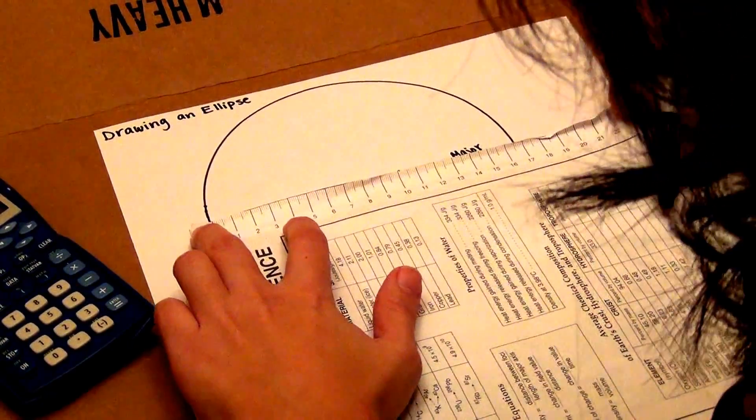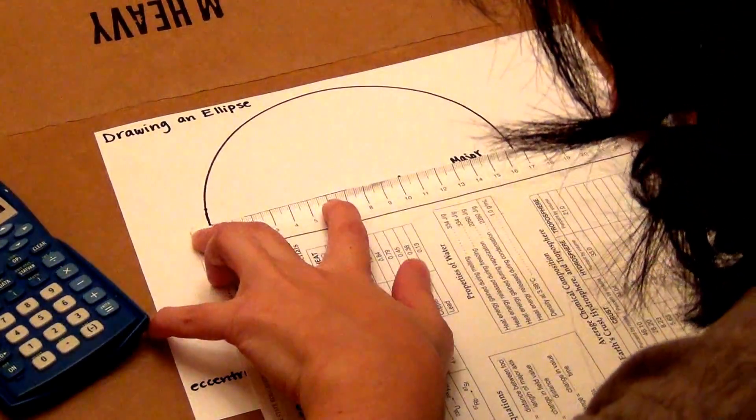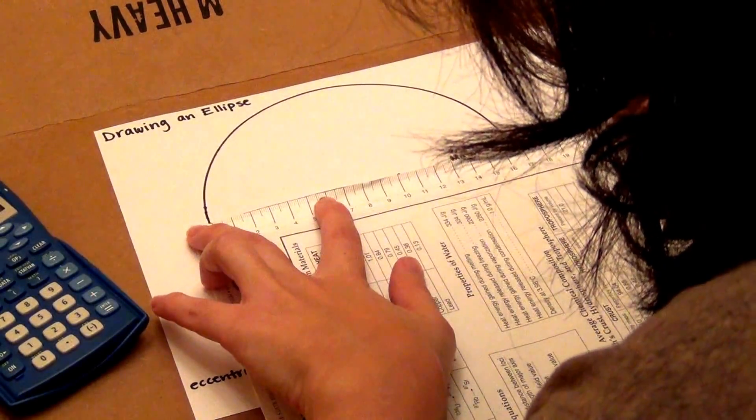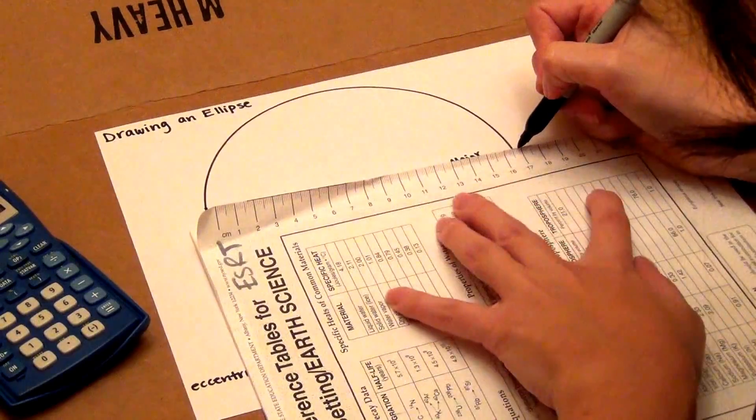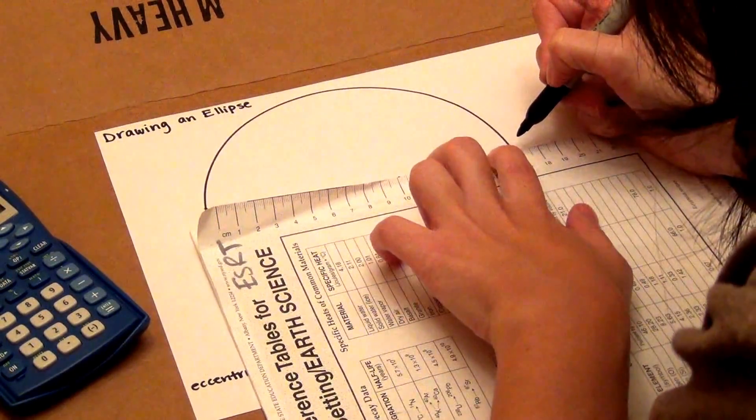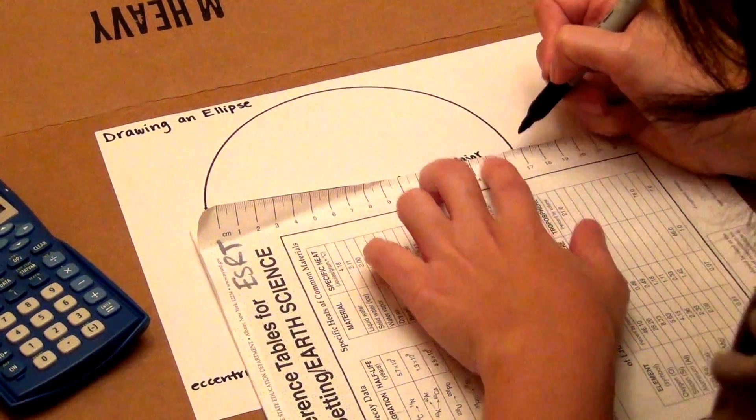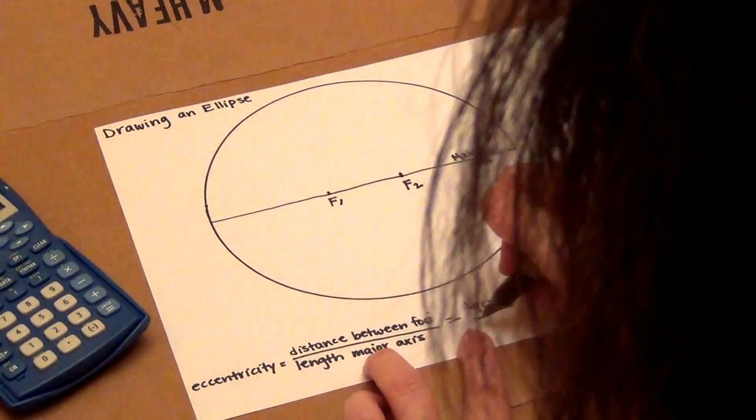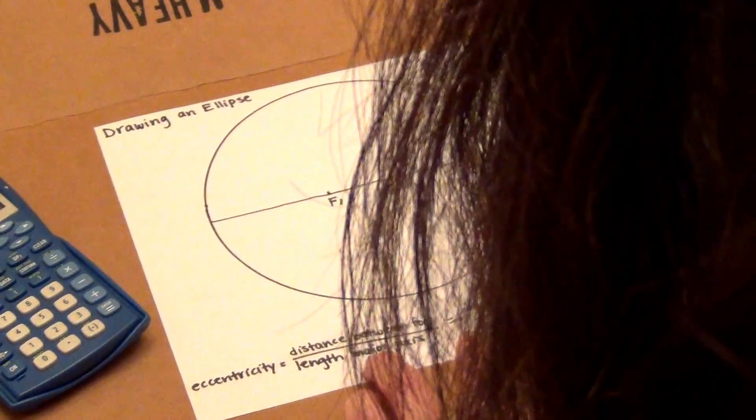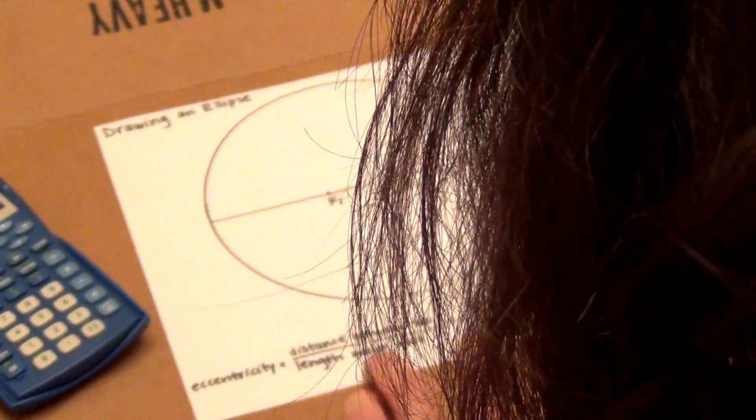So again, I take the reference table and measure the major axis to the nearest tenth. So it comes to about here, which looks to be about 16.7 cm. So in my denominator, I'm going to put 16.7 cm.